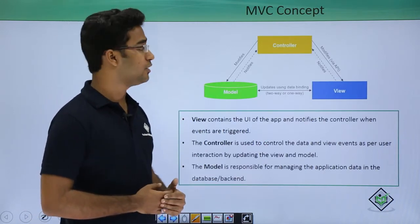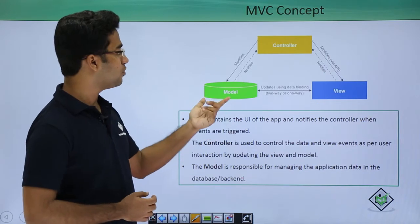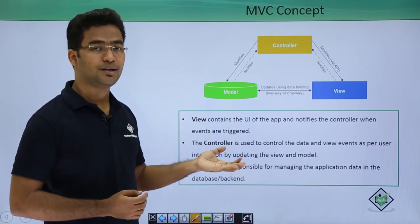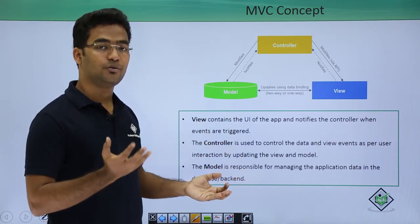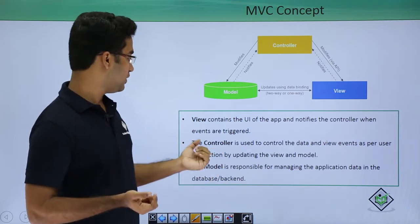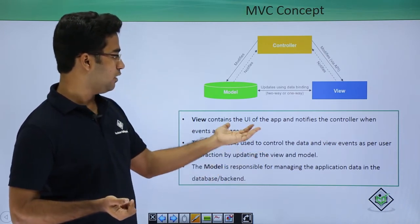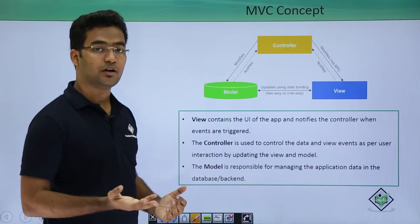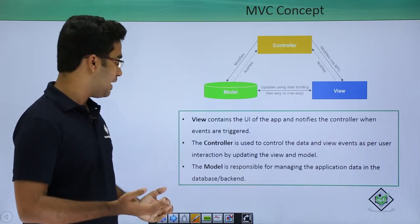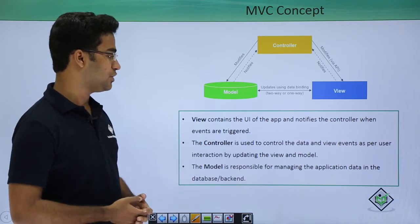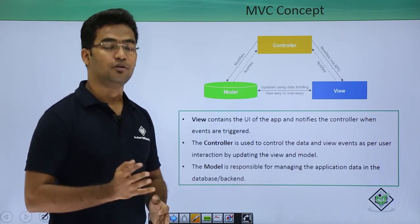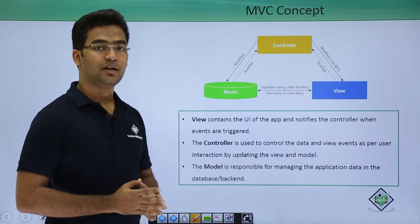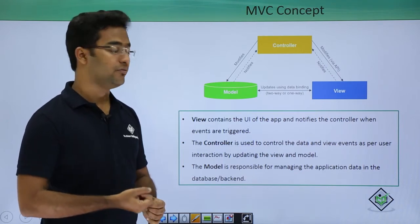Here we will discuss the MVC concept. MVC stands for Model, View, and Controller. Basically views contain the UI — if we are using a button, what should happen on the press of the button should be defined in the controller. Views are the UI of the application and notify the controller when events are triggered. The controller contains the logic for the particular event, and the model is responsible for managing application data in the database or backend. In the model we create a JSON model or a server-side OData model, fetch data from them, and give them to the controller.